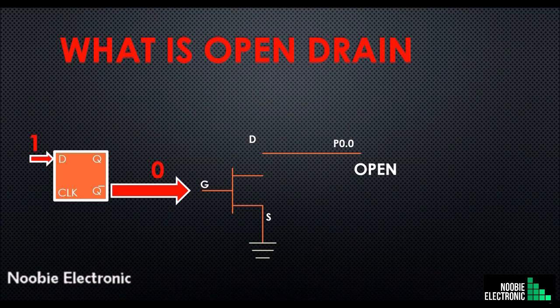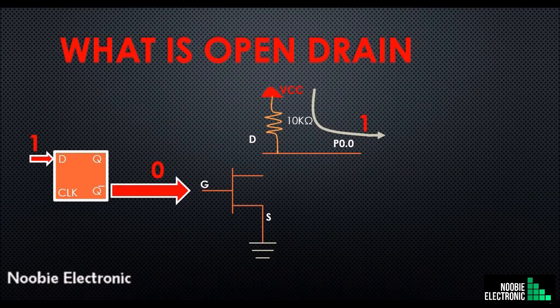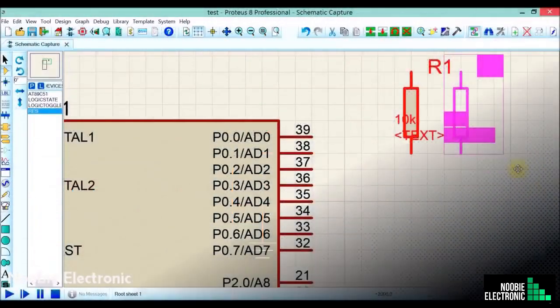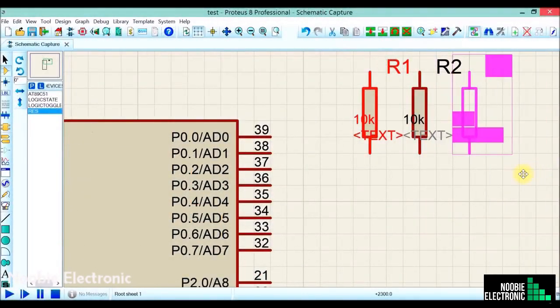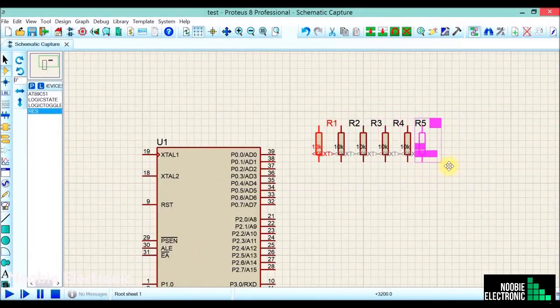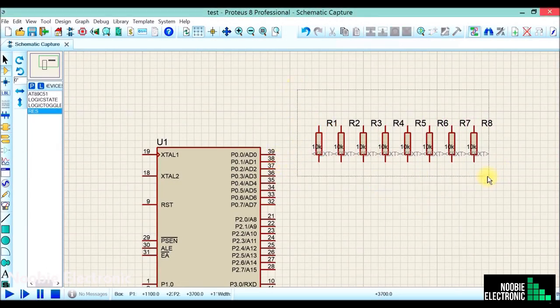The question is how to solve this floating output issue at port 0. The answer is simple: we connect external pull-ups at port 0, so whenever a low signal is applied at the gate, a high signal will appear at port 0 pins due to the external pull-ups. Let's connect pull-up resistors with all pins of port 0 — 10 kilo-ohm pull-ups are recommended.